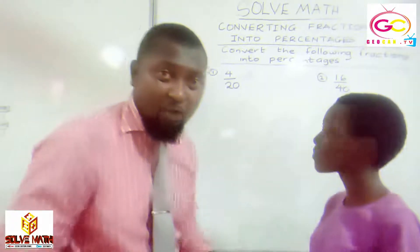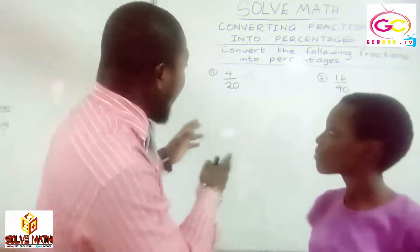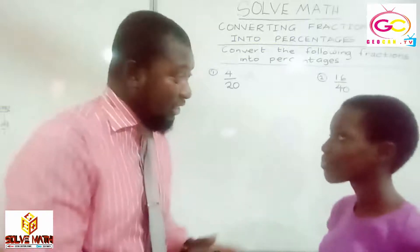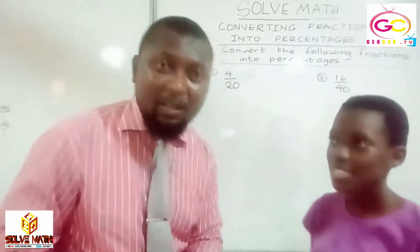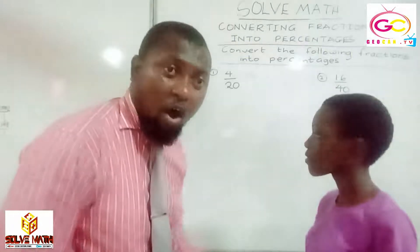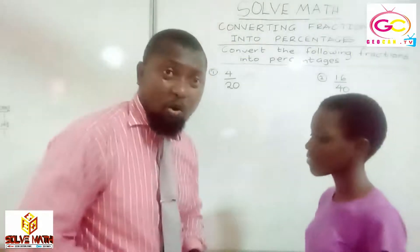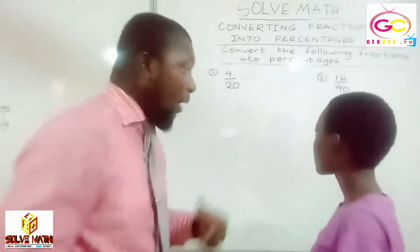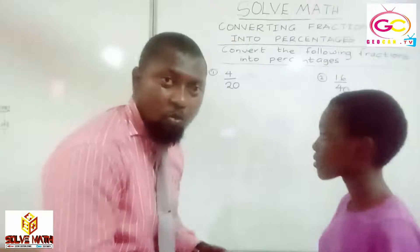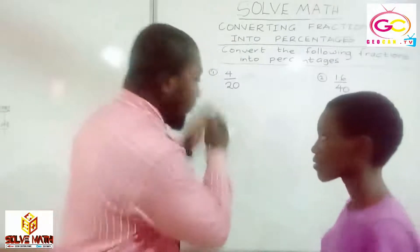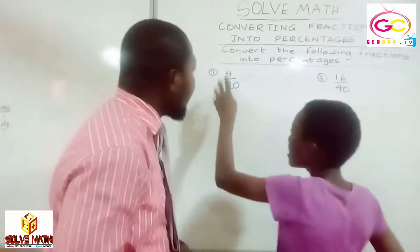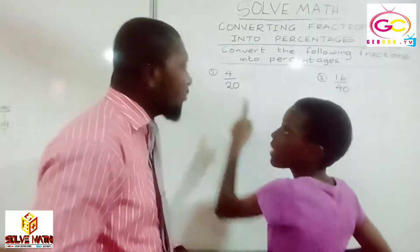We are going to solve this particular question from the board together. So you are going to be answering the questions. We have four over 20, and we are told to convert into percentages. So what is the first step? What do you do? We multiply the four over 20 by 100.